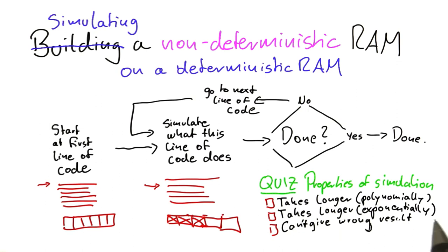And finally, is this sort of simulation robust? So will it always give us the same result that the original program would have given us? Or is there a possibility that such a simulation can make a mistake?